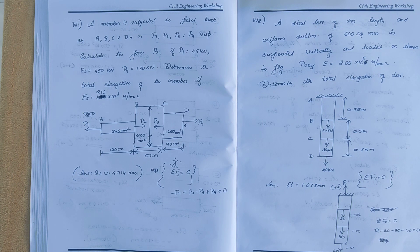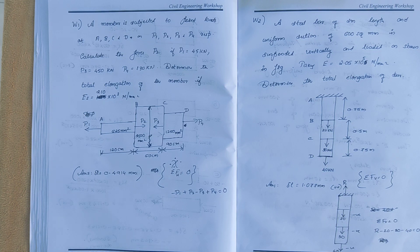A member is subjected to point loads at A, B, C and D as P1, P2, P3 and P4 respectively. P1 equals 45 kN, P3 equals 450 kN, P4 equals 130 kN. Determine the total elongation of the member if E equals 210 into 10 power 3 N/mm².